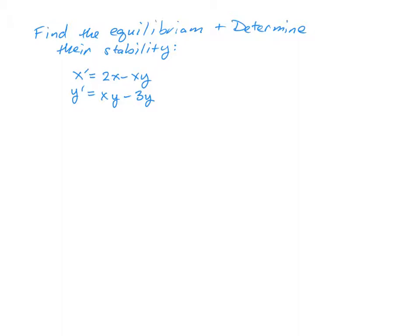Okay, so for this example, we're going to find the equilibrium and determine their stability for this nonlinear system. The first step in finding equilibria is always setting each of the differential equations equal to 0 and solving the nonlinear system that you get as a result.